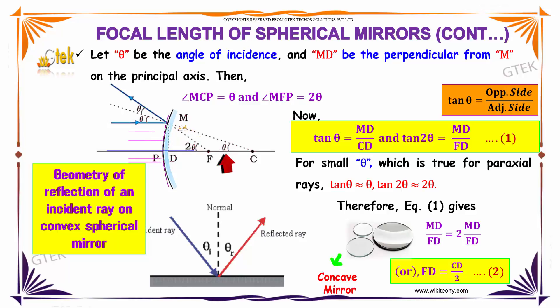Then angle MCP is equal to theta, which indicates angle MFP is 2 theta.